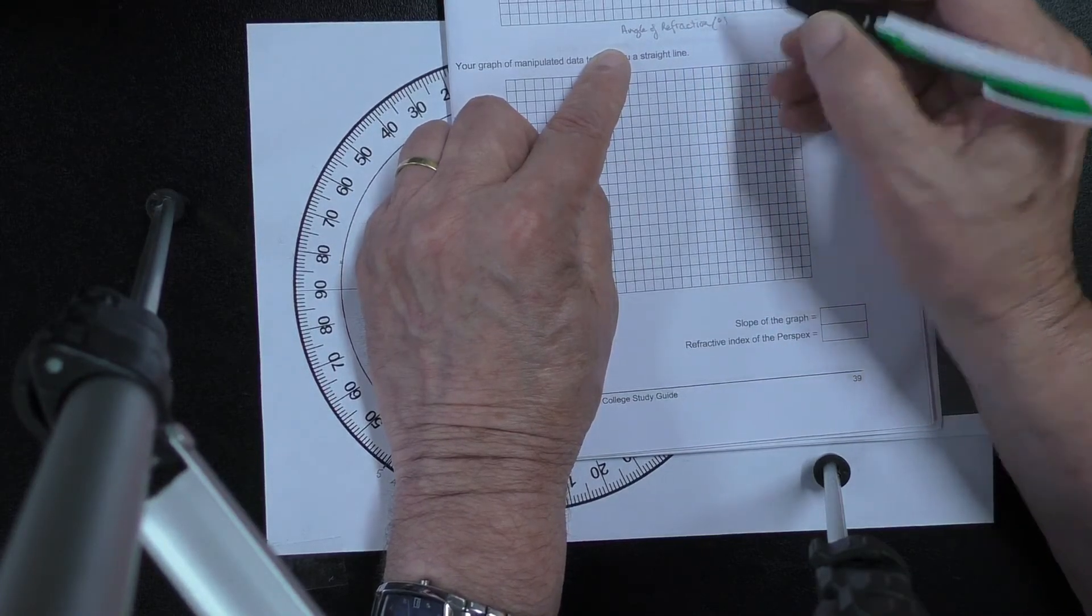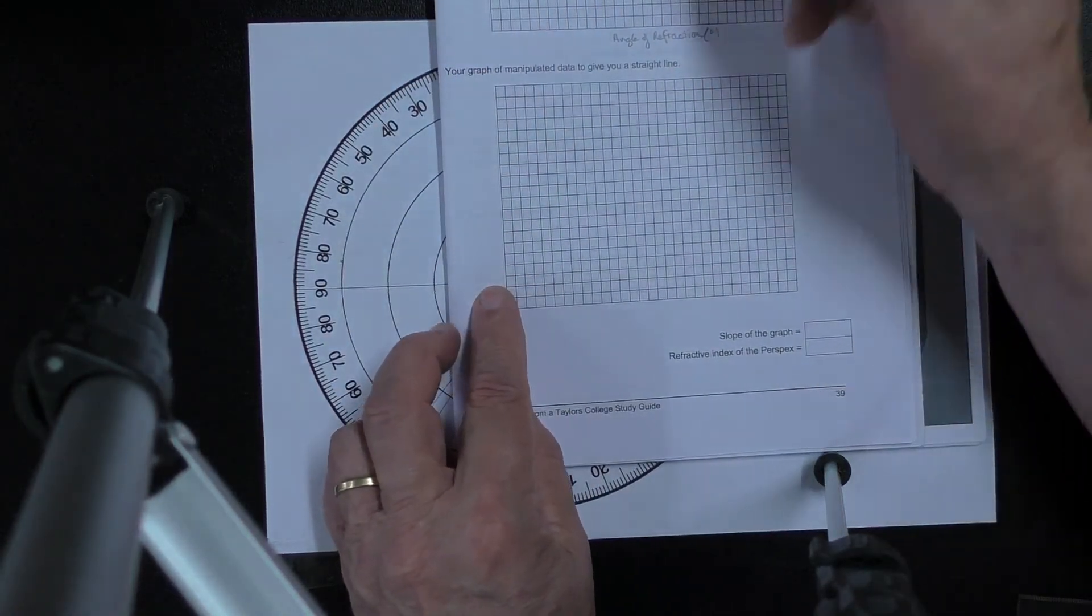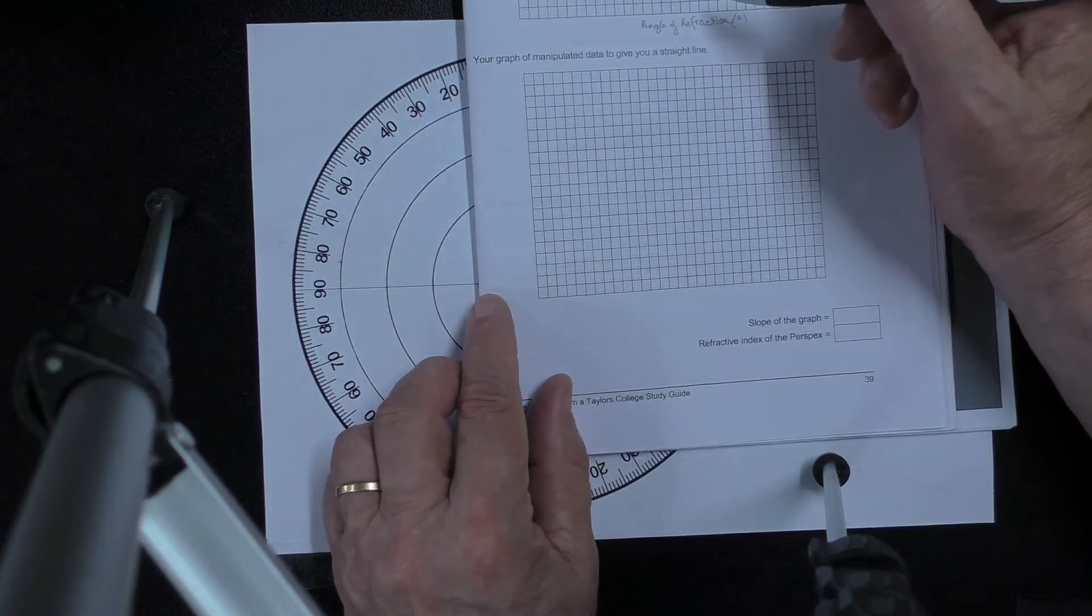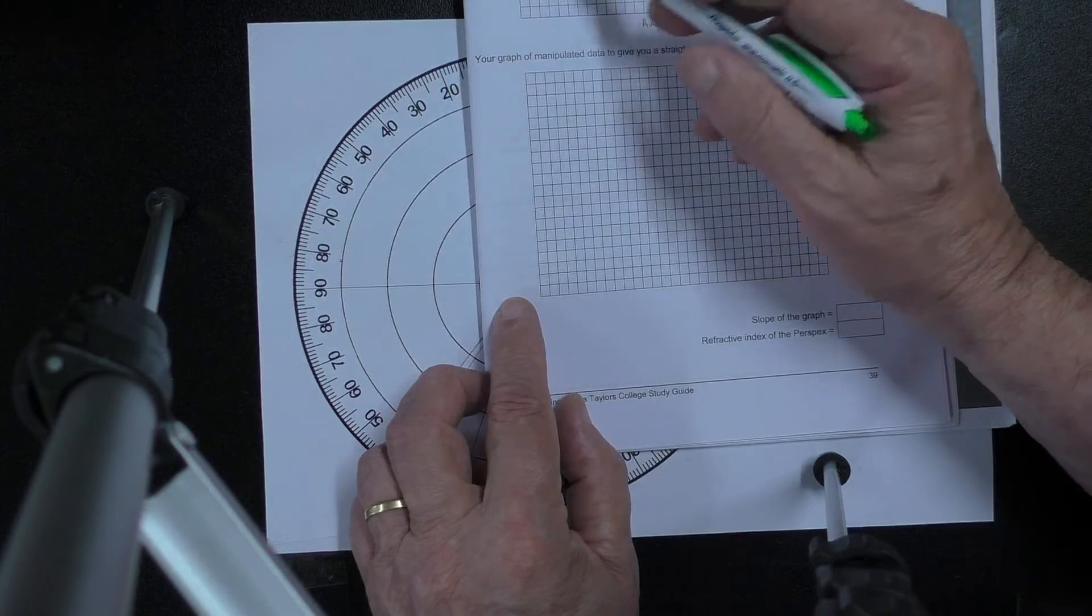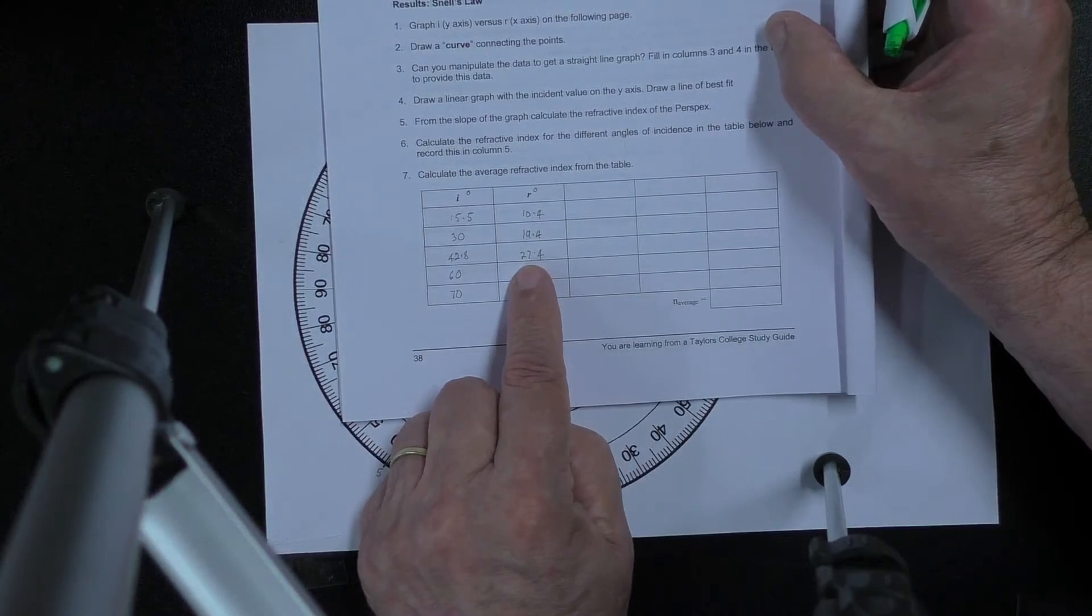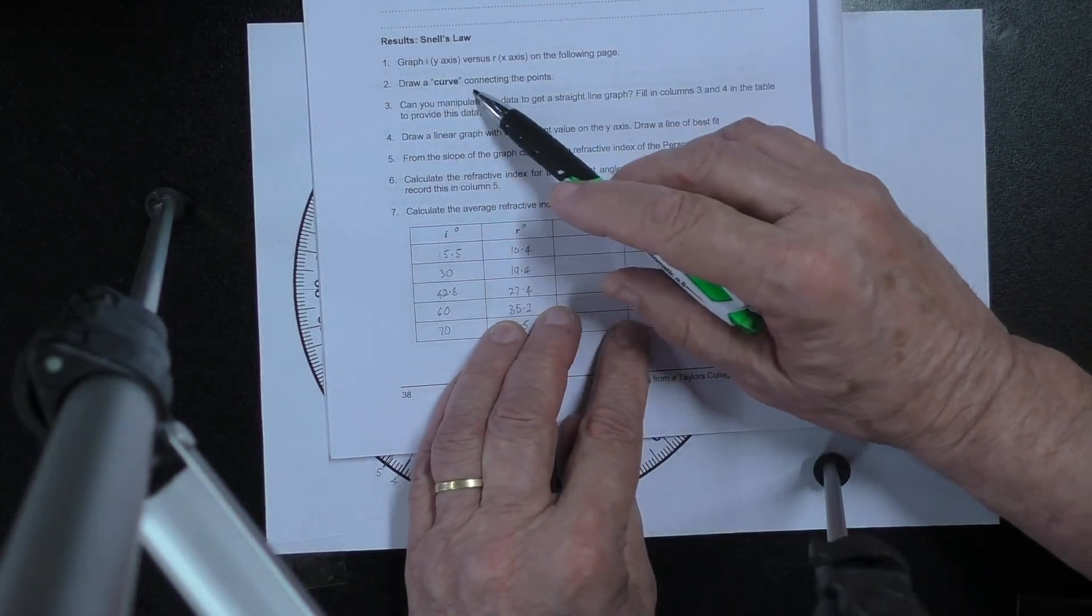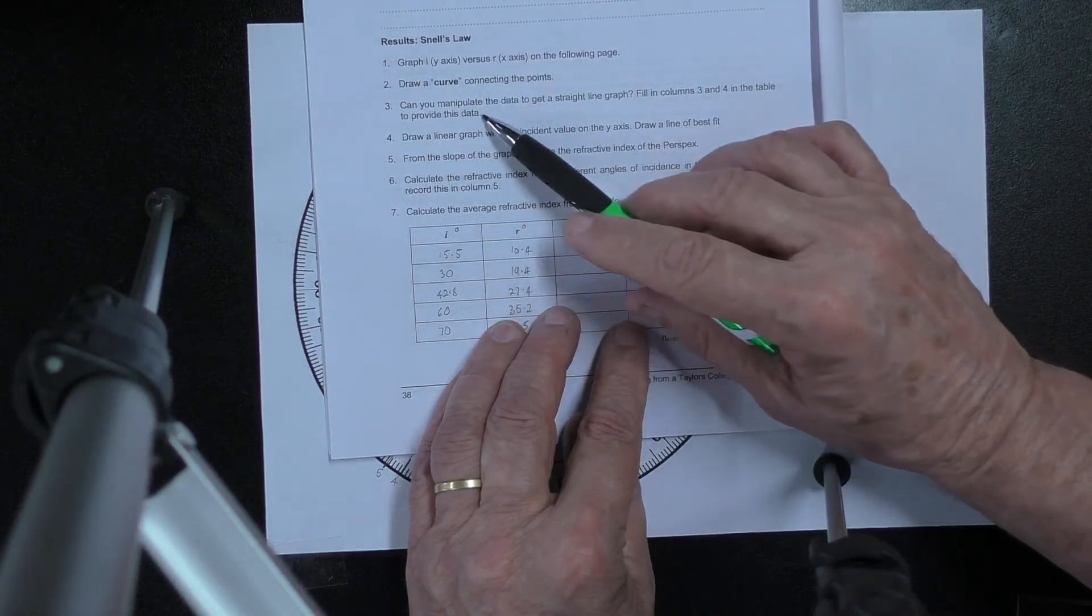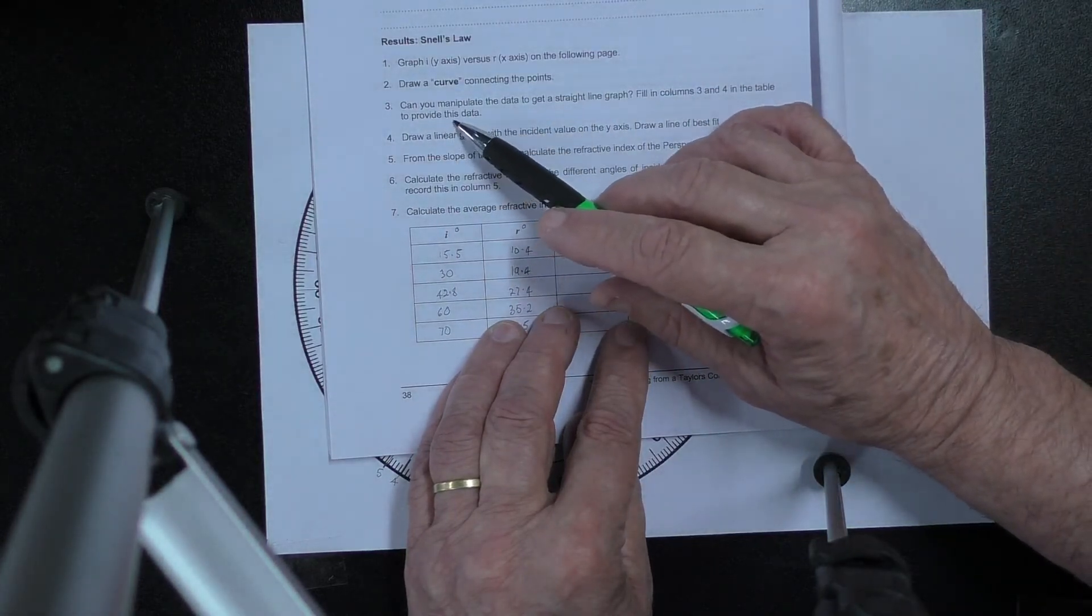And down here angle of refraction and again degrees. I should put in here a title. What I've got to then do is graph these numbers. Once I've done that I will probably get as it suggests here a curve. So you draw a curve connecting the points. Then it says can you manipulate the data to get a straight line graph. Fill in columns three and four in the table to provide this data. So the data to go in here will be sine of the angle of incidence over sine of the angle of refraction.